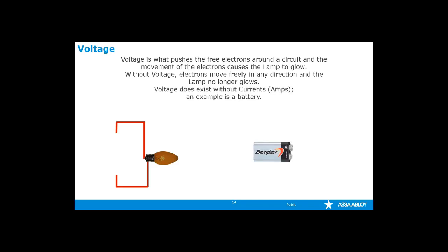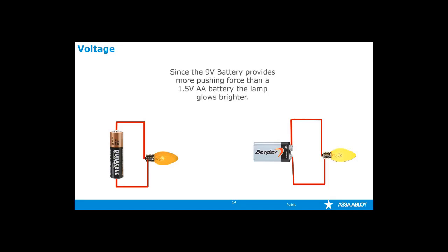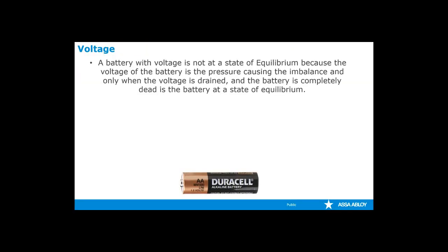You can have voltage without any amperage. A good example of this would be a battery — when it's not hooked up to a circuit, a battery has voltage but there is no current flow. The force of the voltage is the potential energy that is only released when the circuit is created, and then the voltage pushes the electrons through the circuit. Since a 9-volt battery provides more pushing force than a 1.5-volt AA battery, the lamp would glow brighter. A battery with voltage is not at a state of equilibrium; only when the voltage is completely drained and the battery is completely dead will it be at a state of equilibrium.